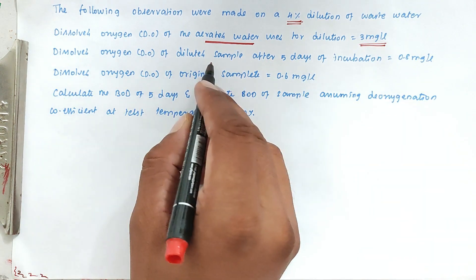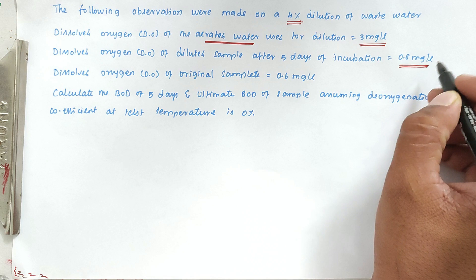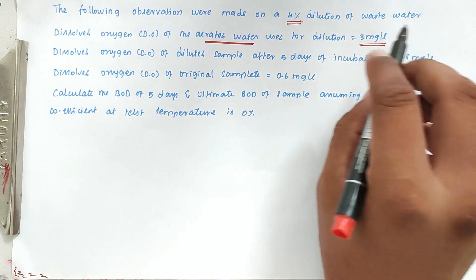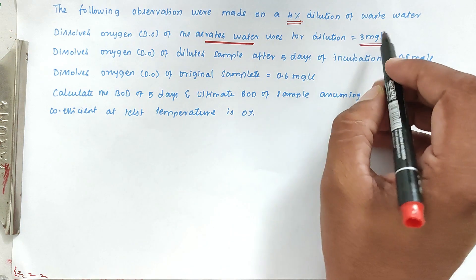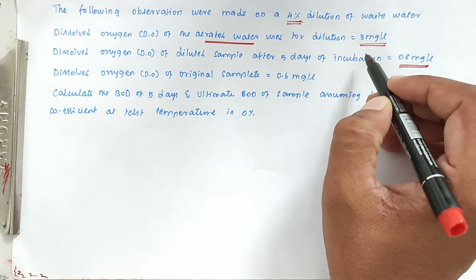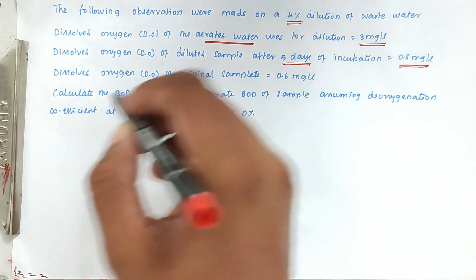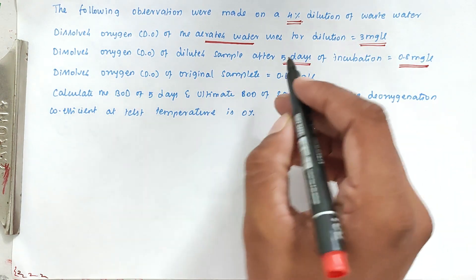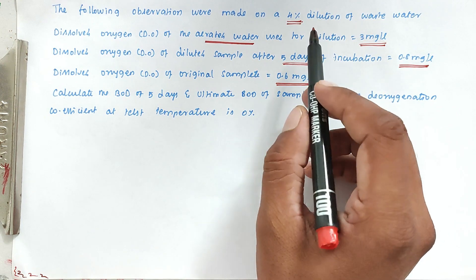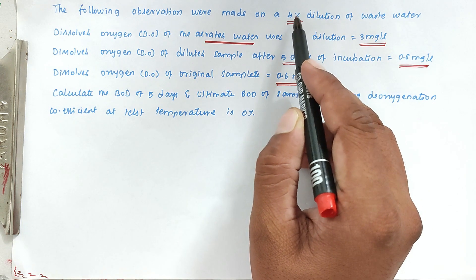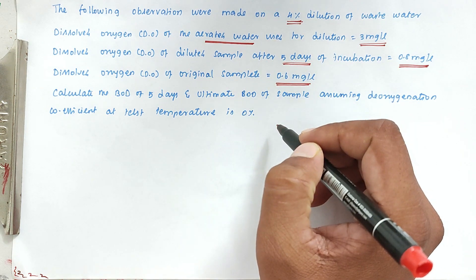The dissolved oxygen of the diluted sample after 5 days of incubation is 0.8 mg per litre. So initially it has 3 mg per litre and it is reduced to 0.8 mg per litre after 5 days of incubation. The dissolved oxygen of the original sample is 0.6 mg per litre — that 4% of waste water has 0.6 mg per litre of dissolved oxygen.